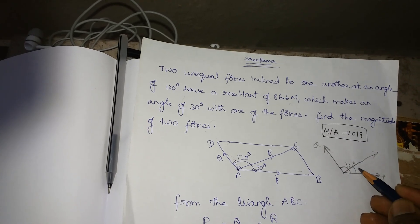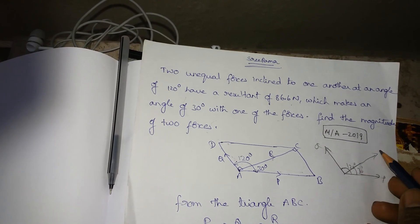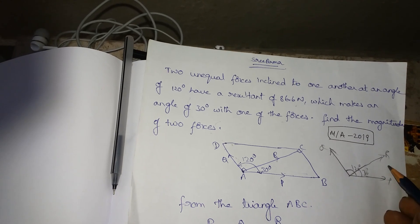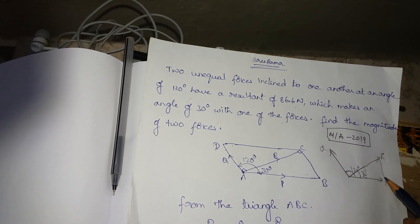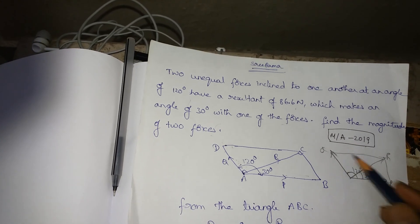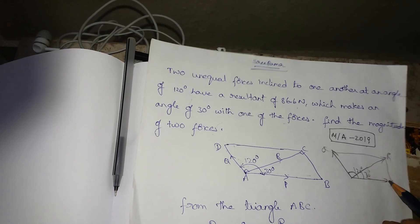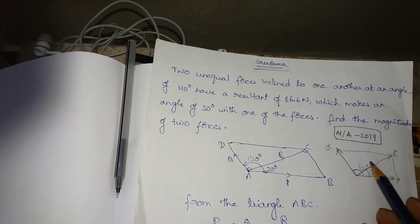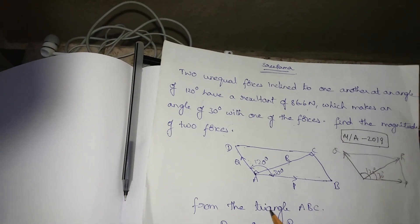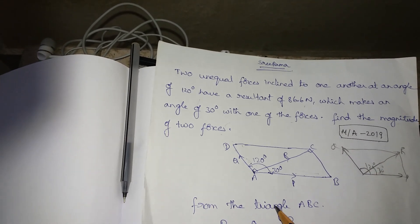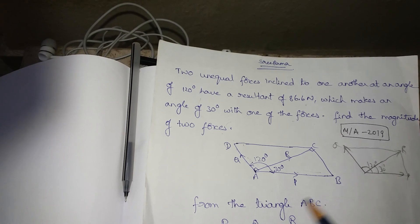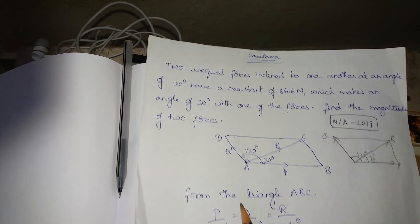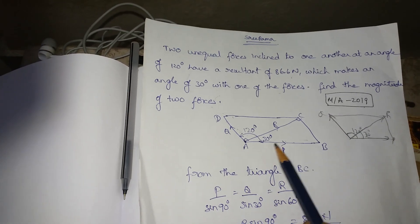This is R at 30 degrees. So we have a resultant. We have a parallelogram. So we have a triangle shape — triangle ABC.